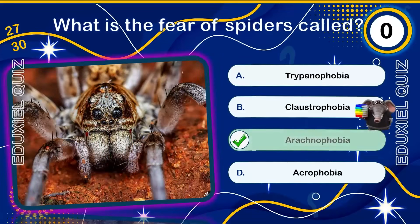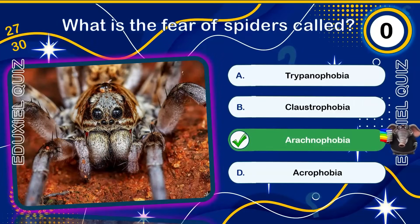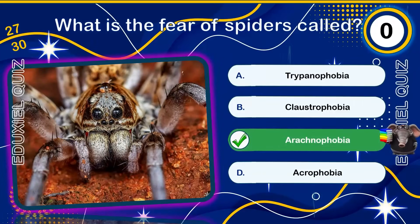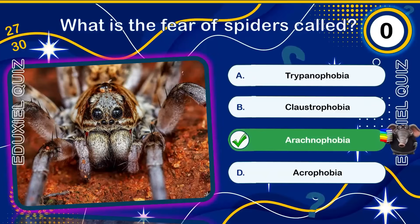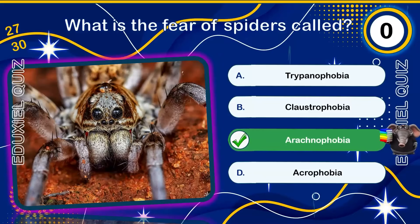What is the fear of spiders called? Arachnophobia — the intense fear of spiders — affects up to six percent of the population. Evolutionary theories suggest it may have developed as a survival mechanism. Even harmless spiders can trigger disproportionate fear responses in those affected.